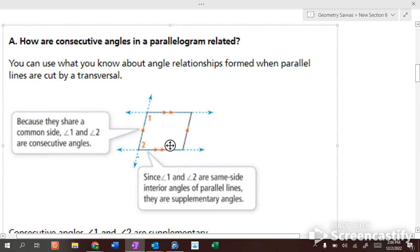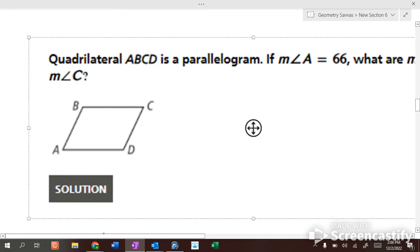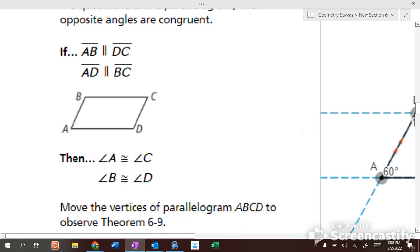Alright. Consecutive angles are supplementary. So if consecutive angles are supplementary, and we know angle A is 66, what's every other angle? What's angle B? Yeah, I have calculators in front of you. What's angle B? 114. What's angle C? 66. What's angle D? 114. Consecutive angles are supplementary. Opposite angles are congruent.